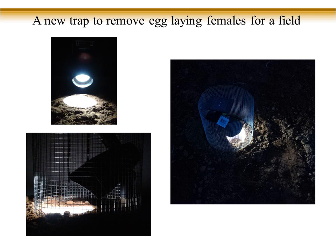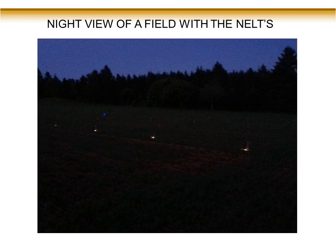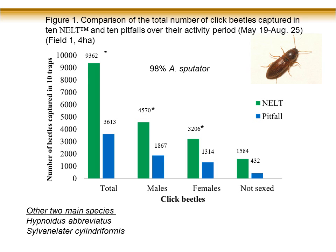The other reason for these traps is that sod fields and pasture fields are source fields — wireworms in them produce adults that move into your other fields. A pasture field needs to remain a pasture field so you can feed your cattle, so you can't treat it with rotation crops. These traps can be placed in pasture fields to trap and reduce the adult beetle population coming from those source fields.